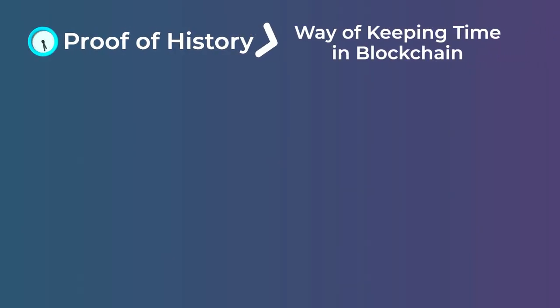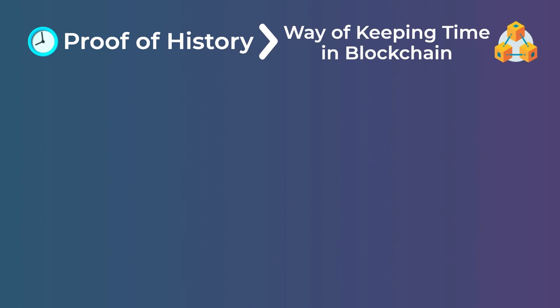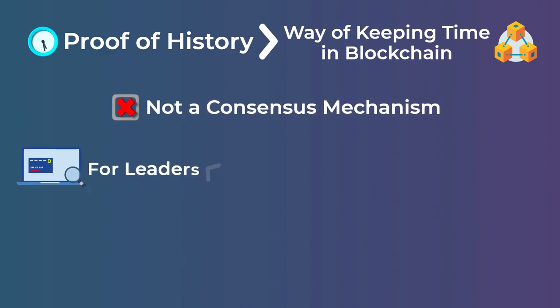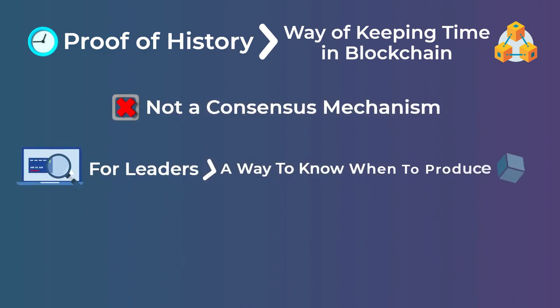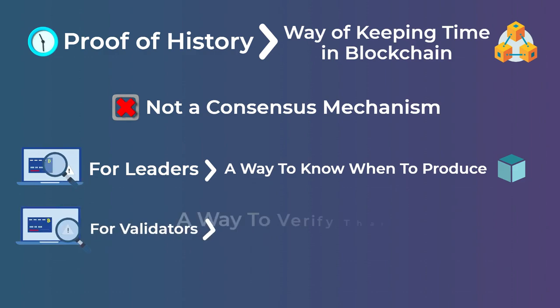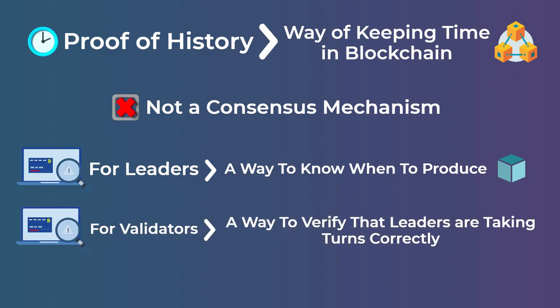Proof of History is a way of keeping time in a blockchain. The most important thing is that it is not a consensus mechanism. It is a way for leaders to know when to start producing a block, and a way for validators to verify that the leader produced the block in his turn. To understand how Proof of History works, you first need to understand something called a hash function.